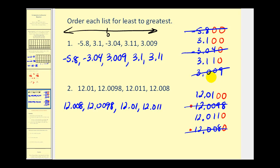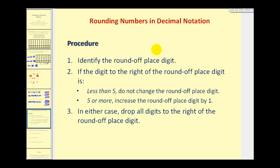Okay, let's go ahead and finish by talking about rounding. Rounding decimals is very similar to rounding whole numbers. Step one is to identify the round off digit. Step two, if the digit to the right of the round off place digit is less than five, we round down, so we do not change the round off digit. If it's five or more, we round up by increasing the round off digit by one. In either case, we drop all digits to the right of the round off place digit.